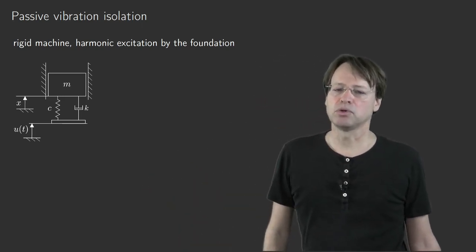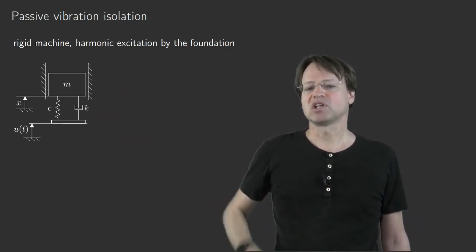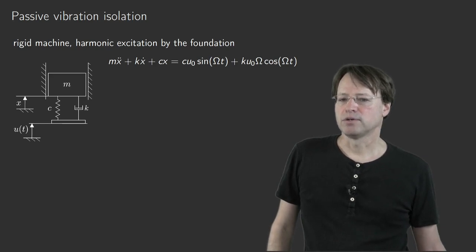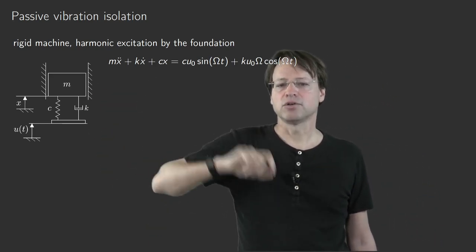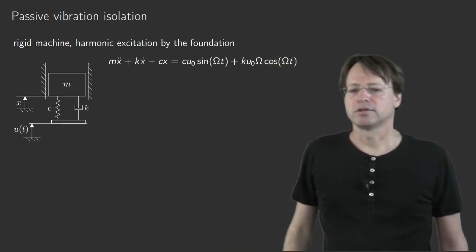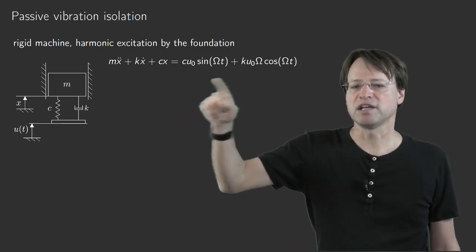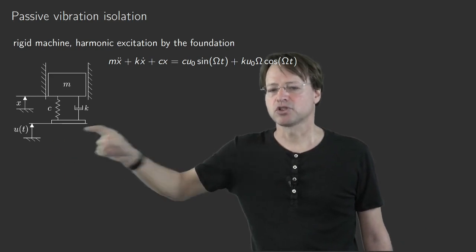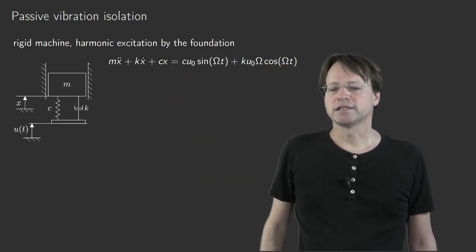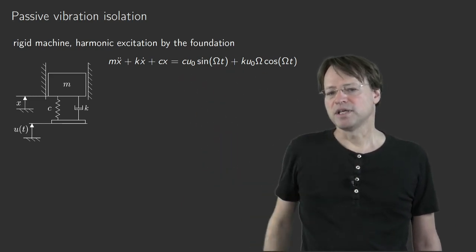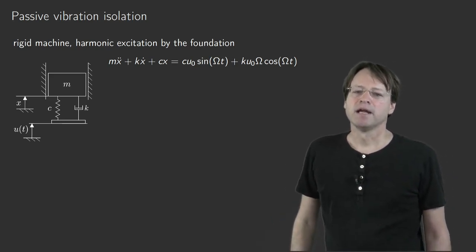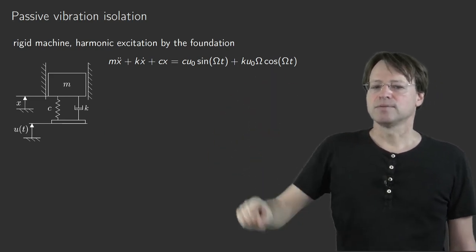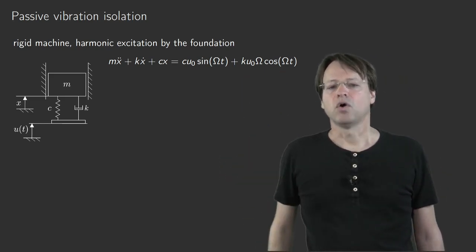To study that problem I have to write down the equation of motion. It is the equation of motion of a single degree of freedom oscillator under excitation by displacement of the foundation. On the left-hand side you can see the inertia term, the damping term, and the stiffness term. On the right-hand side is the excitation, coming from the spring force c multiplied by the displacement, which is harmonic with amplitude u0 and harmonic law sine(Ω·t). For the damper we take the first-order derivative, giving u0·Ω·cos(Ω·t).